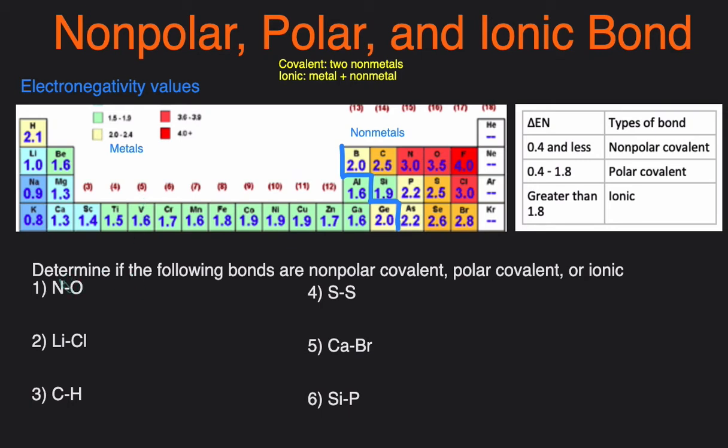We have to determine if the following bonds are non-polar covalent, polar covalent, or ionic. Let's first check if these are covalent or ionic. N-O. N and O are both non-metals, so we know that it has to be covalent.